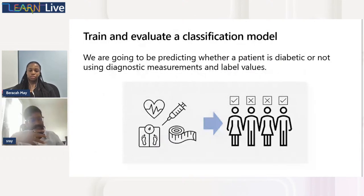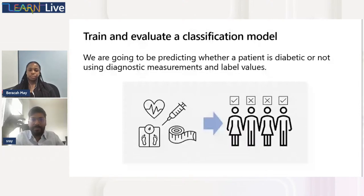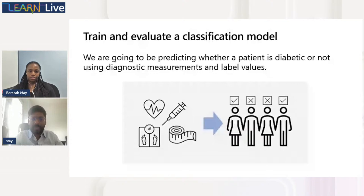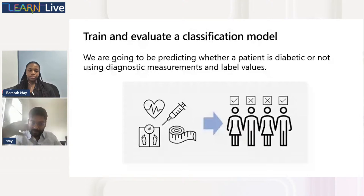Similar examples exist for breast cancer, tuberculosis, and red eye problems. Here we use a simple dataset, and this is an illustrative example — in real life you would need much more data and many more data points to accurately predict whether a person is diabetic or not.